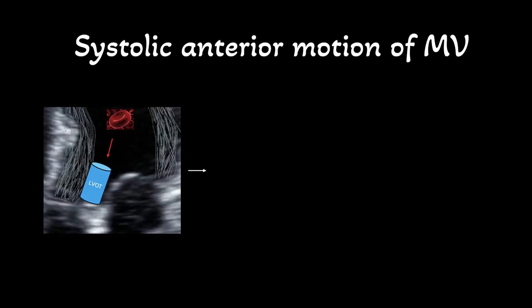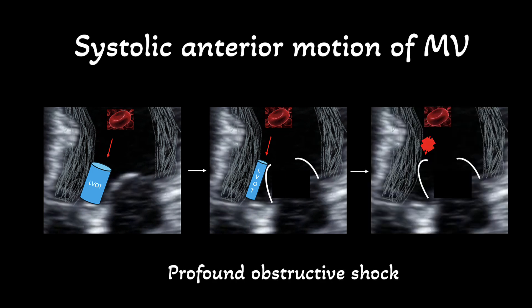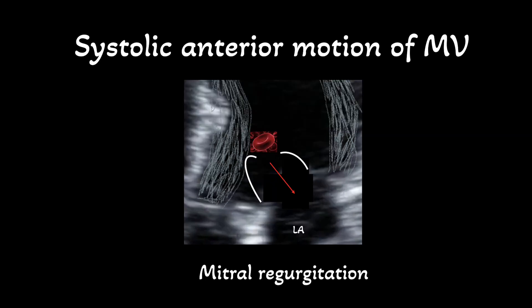The consequences of SAM are twofold. First, the mitral valve further narrows the already narrowed LVOT, resulting in a worsening vacuum effect that further pulls in the mitral valve. At some point, the LVOT is completely blocked and blood cannot leave the left ventricle, resulting in profound obstructive shock. Secondly, since the anterior and posterior mitral valve leaflets no longer coapt in systole, this leads to mitral regurgitation and therefore pulmonary edema.